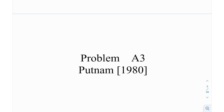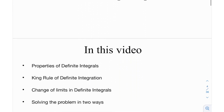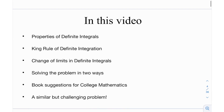This is problem A3 from the Putnam exam in 1980. In this video, we're going to be looking at properties of definite integrals — the king's rule of definite integration, which is really just a colloquial name. And then another property called the change of limits, or splitting the limits. We're going to be solving the problem in two ways, like I said before, and at the end there's a similar but challenging problem.